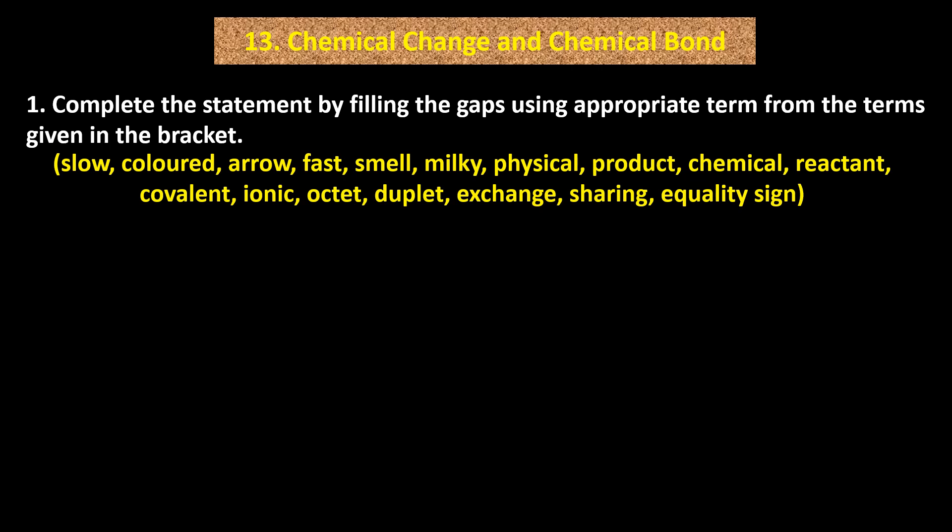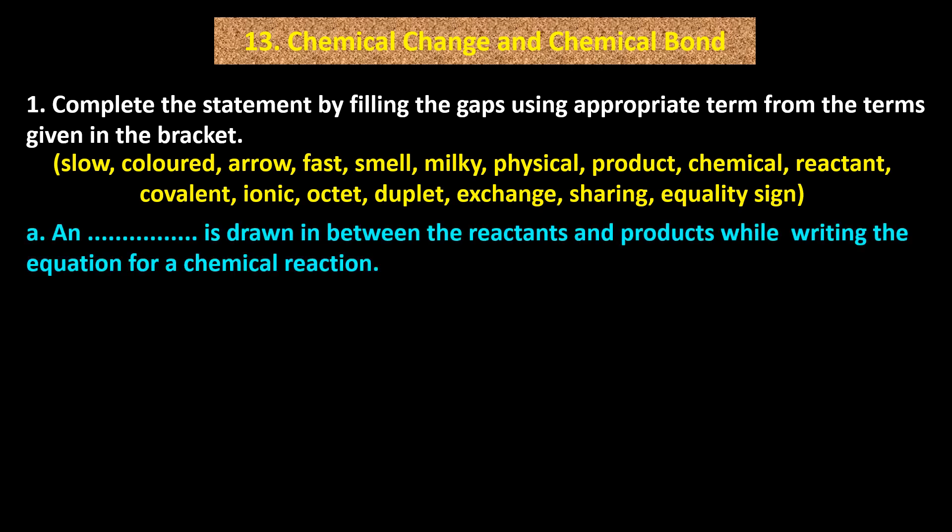The remaining terms in the bracket are: chemical, reactant, covalent, ionic, octet, duplet, exchange, sharing, equality sign. Statement A: An blank is drawn in between the reactants and products while writing the equation for a chemical reaction.